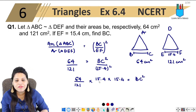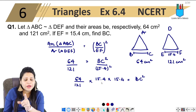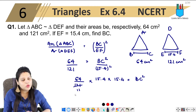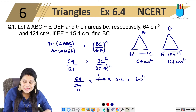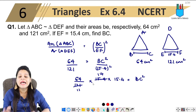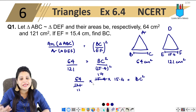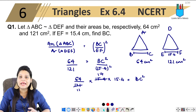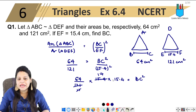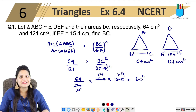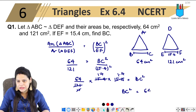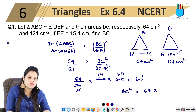Now we simplify. We can cut 121 as 11 times 11, and 15.4 divided by 11 gives 1.4. So after cancellation, BC squared equals 64 multiplied by 1.4 into 1.4.